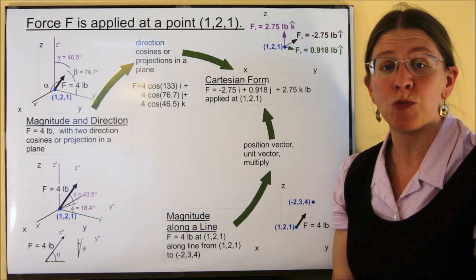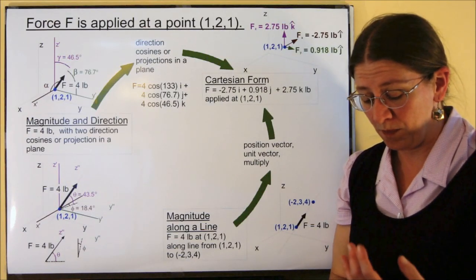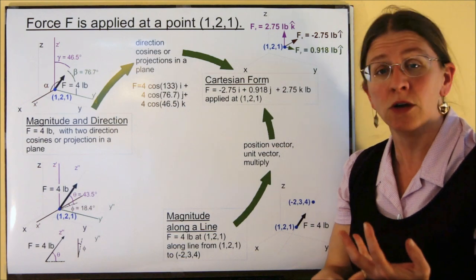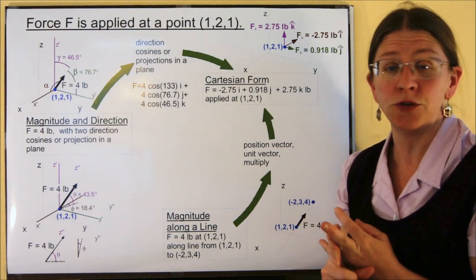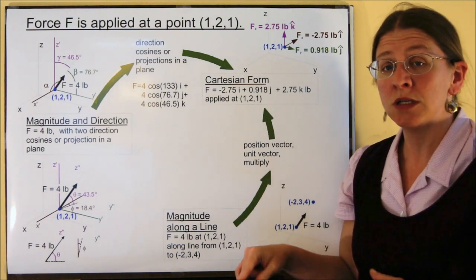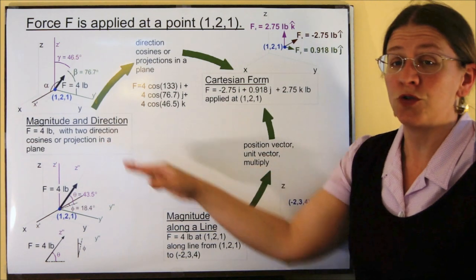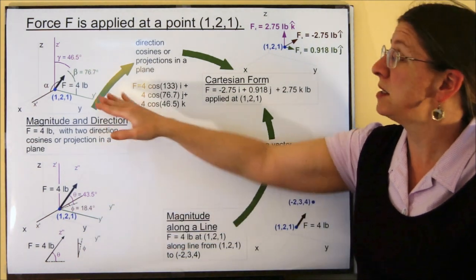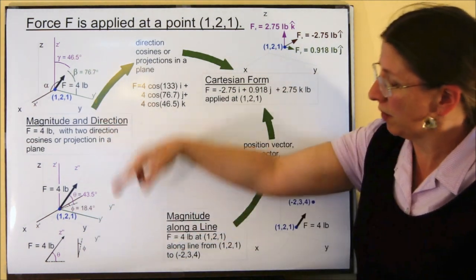We've been talking about how a vector can be expressed as a magnitude along the line, or in Cartesian form, or as a magnitude in direction. In three dimensions, you will see magnitude in direction in either direction cosines or a projection in the plane, moving the other way around.